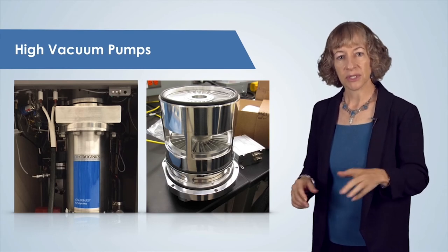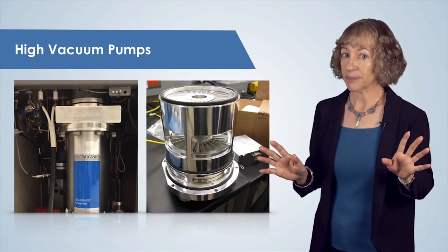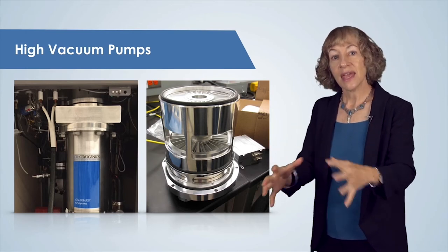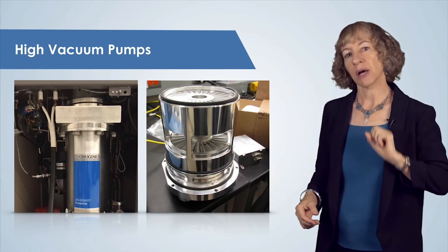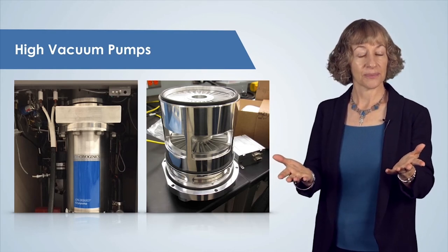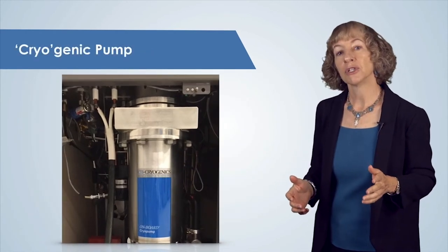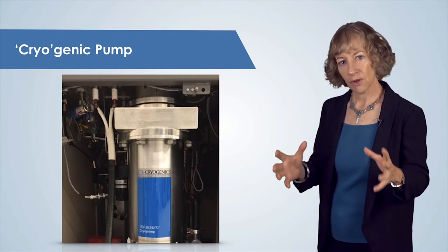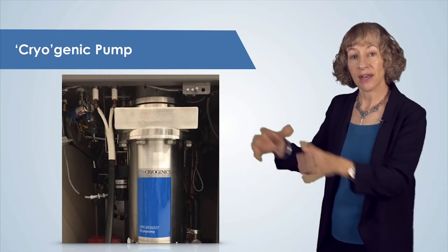However, the high vacuum pumps that will evacuate the chamber to a much lower pressure don't function at atmospheric pressure, so we need to start with a mechanical pump and then use a high vacuum pump after the mechanical pump. The two high vacuum pumps that we will present in this course are cryogenic pumps and turbomolecular pumps. The cryogenic pump, or for short the cryo pump, is capable of reaching much lower pressures than a mechanical pump alone. First, we rough pump the system with a mechanical pump, and then after that we use the cryo pump.